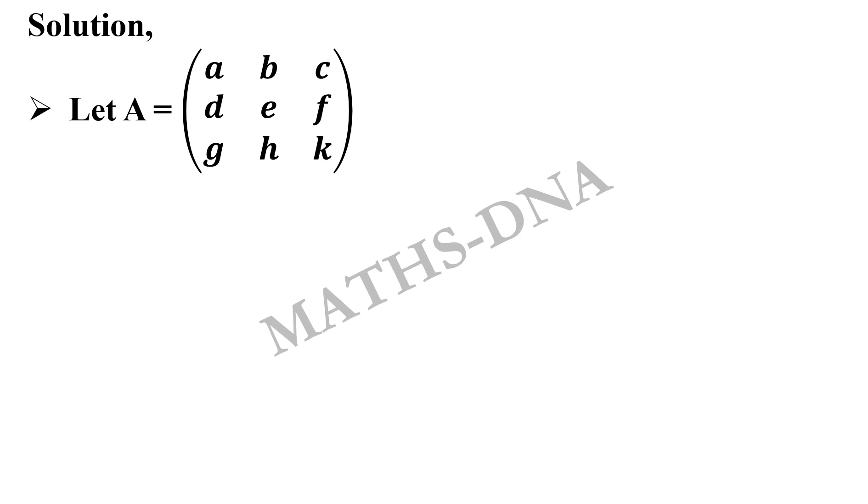Also in the question it is mentioned that A is a complex matrix but we are considering over here the imaginary part as 0 because there is no issue with that. It is also considered a complex one. Now as per option A and option B, we have to find determinant of minus 1 raised to i plus j Aij.